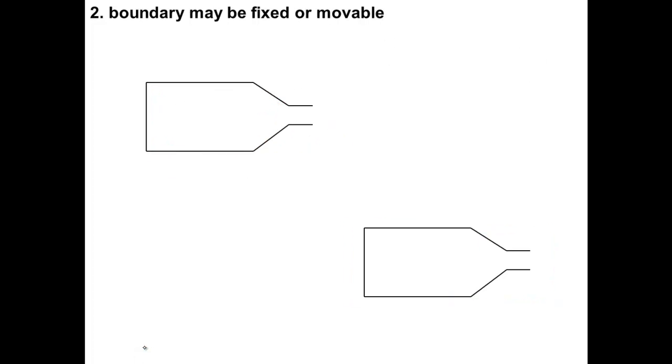The second point is boundary may be fixed or movable. Still using this example, for the first possibility, the boundary looks like this and is fixed in this case. The boundary only surrounds the inside space of the bottle.